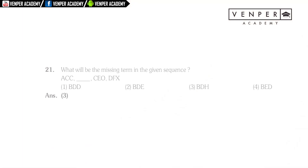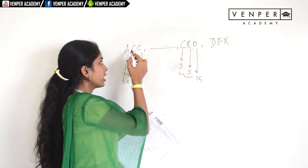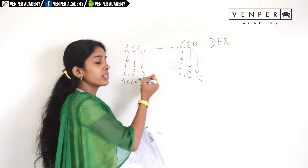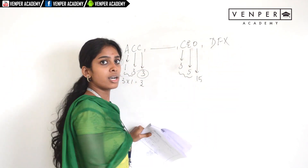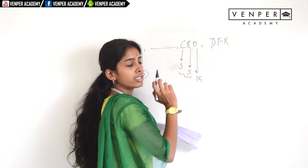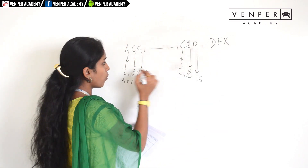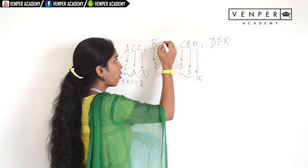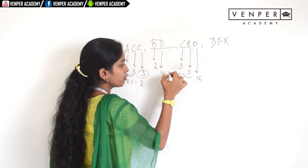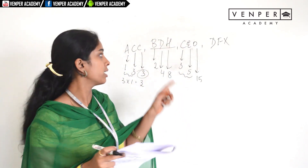Question twenty (letter multiplication pattern): C is the third letter, E is the fifth — 3×5=15, and the fifteenth letter is O. Between positions 1 and 3, the middle is 2, so B is the second letter. Between 3 and 5, the middle is 4, giving D. 2×4=8, so the eighth letter is H. The answer is B, D, H — the third option.